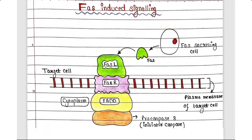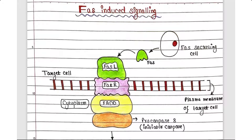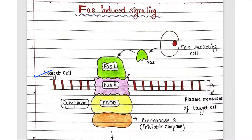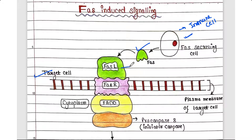The next signaling pathway is FAS-induced signaling. The mechanism of apoptosis here is almost the same — just the ligand is different. The target cell is undergoing a particular stress, and the immune cell can sense this stress. The immune cell secretes the ligand FAS, instead of TNF, and this FAS ligand will bind to the FAS receptor embedded in the plasma membrane of the target cell.